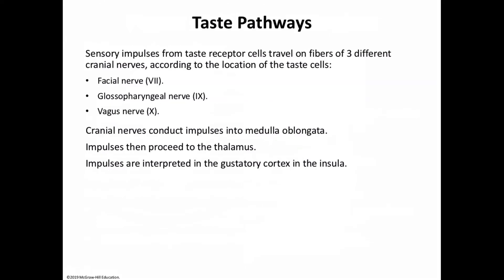For a chemical to be tasted, it must be dissolved in saliva and diffuse into the taste pore to contact the gustatory cells — taste transduction. Impulses from taste receptor cells travel on fibers from three cranial nerves: cranial nerve VII (facial nerve), cranial nerve IX (glossopharyngeal nerve), and cranial nerve X (vagus nerve). These impulses are conducted into the medulla oblongata, then to the thalamus, and are interpreted in the gustatory cortex in the insular portion of the brain.